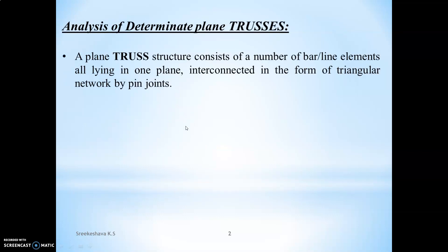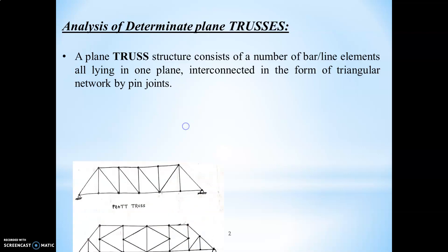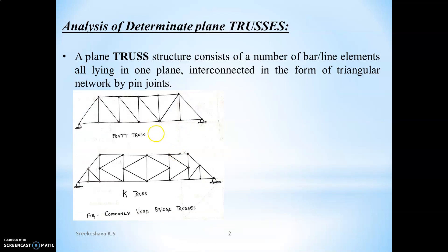What is meant by a determinate plane truss? A truss is a structure made up of a triangular network connected by pin joints. Those elements are bar elements or line elements lying in a single plane. A plane truss consists of a number of bar or line elements, all lying in a single plane, interconnected in the form of a triangular network at pin joints.